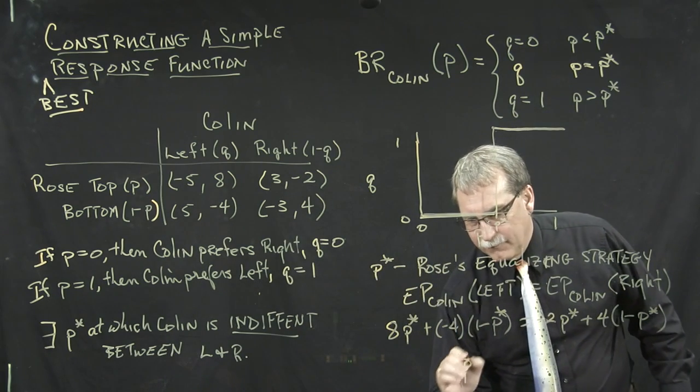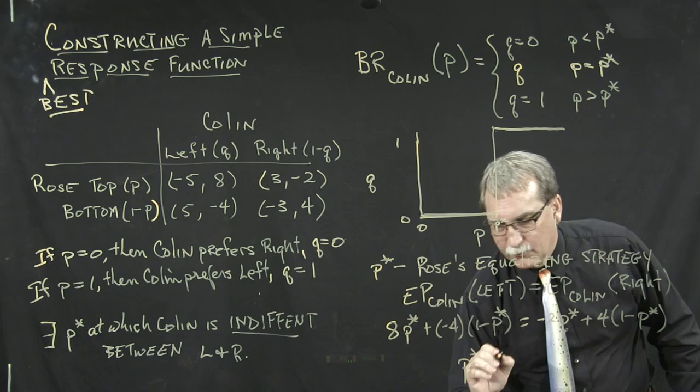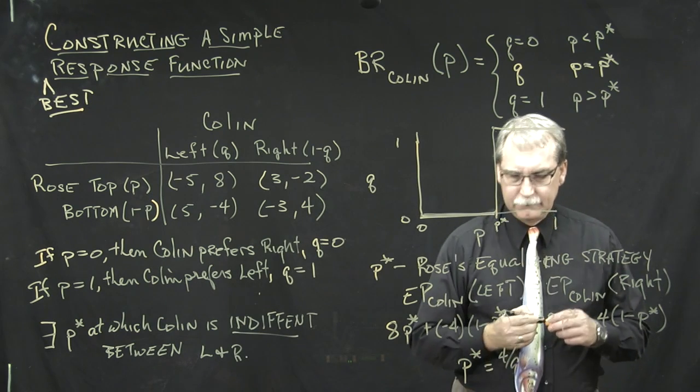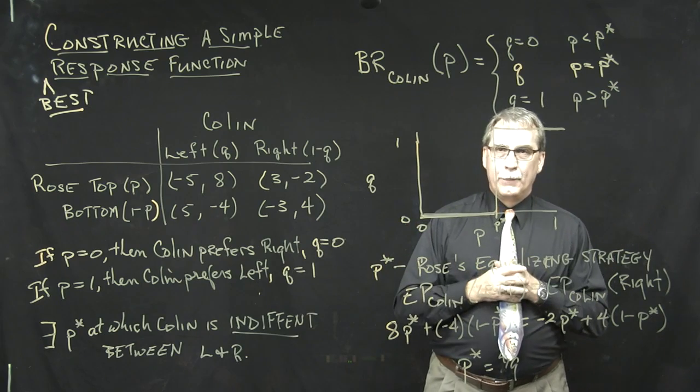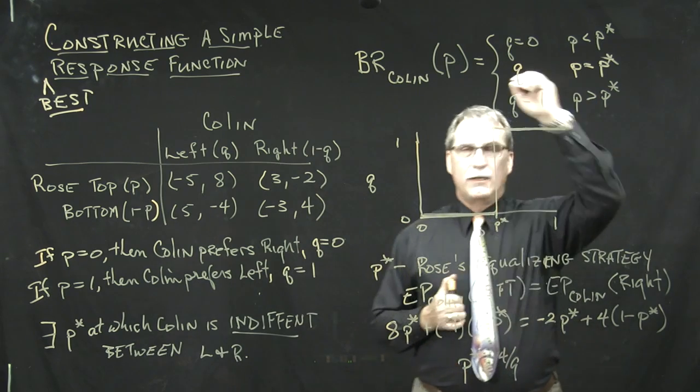And now we have an elementary linear equation to solve, which yields the value P star equal to 4 ninths. So, what have we found here? First, we found the best response function.